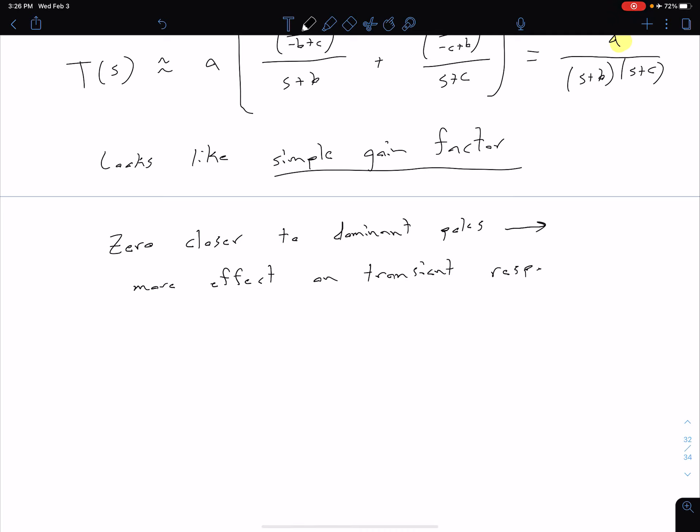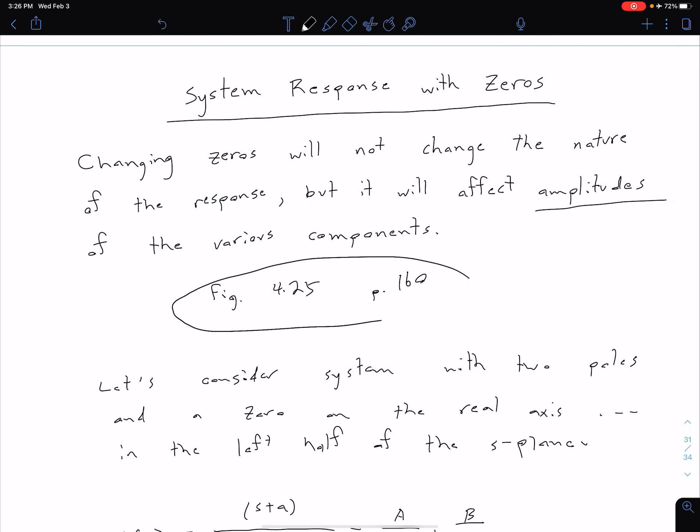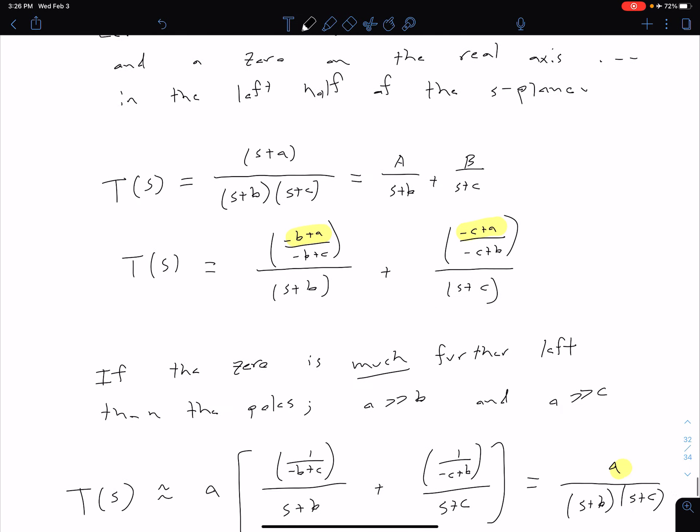And so remember, it's not going to change the form of the transient response. Rather, it's just going to change things such as our percent overshoot. And so again, I would encourage you to go take a look at this figure, and that will show that a little more clearly.